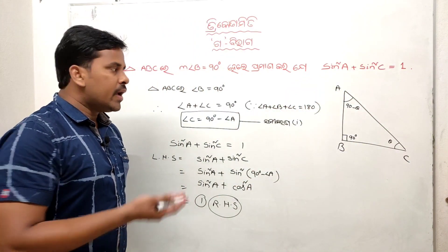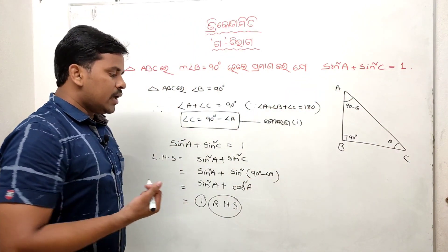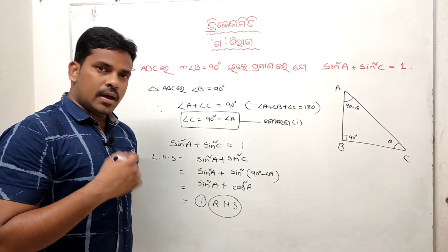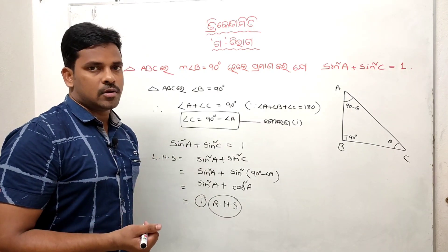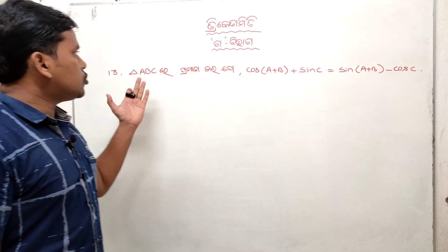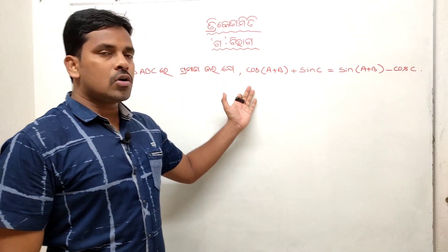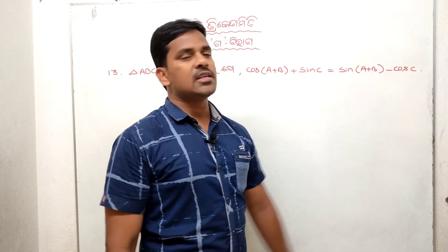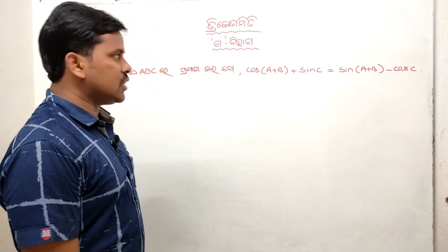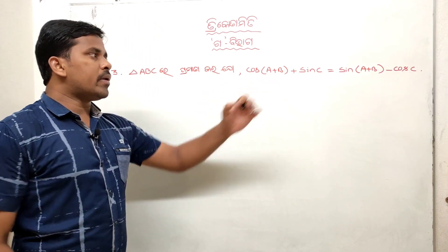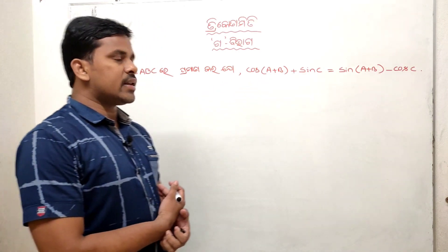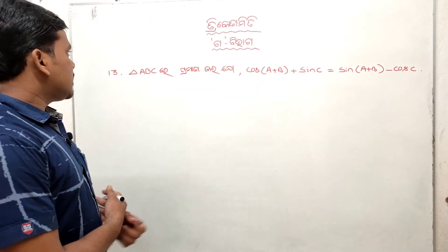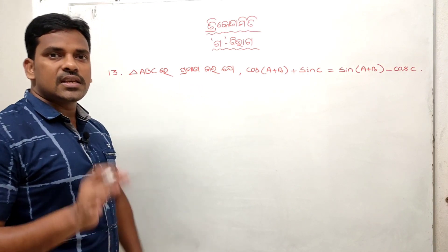So this equals 1, which was the right-hand side. Thus we have proved LHS equals RHS. That completes problem number 12. Now let's look at problem number 13: In triangle ABC, prove that cos(A plus B) plus sin C equals something. We have proved it by showing LHS equals RHS.